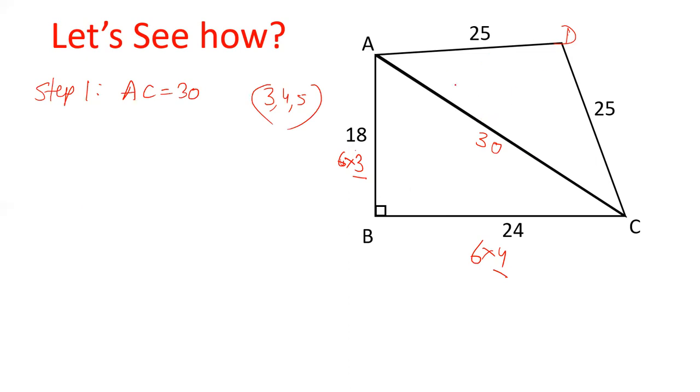Look, triangle ACD has two sides equal. If I draw a perpendicular, this is an isosceles triangle. Perpendicular will be bisecting this value to 15. This is step number 2. Step number 2 is what we calculate. This triangle is what we call E.